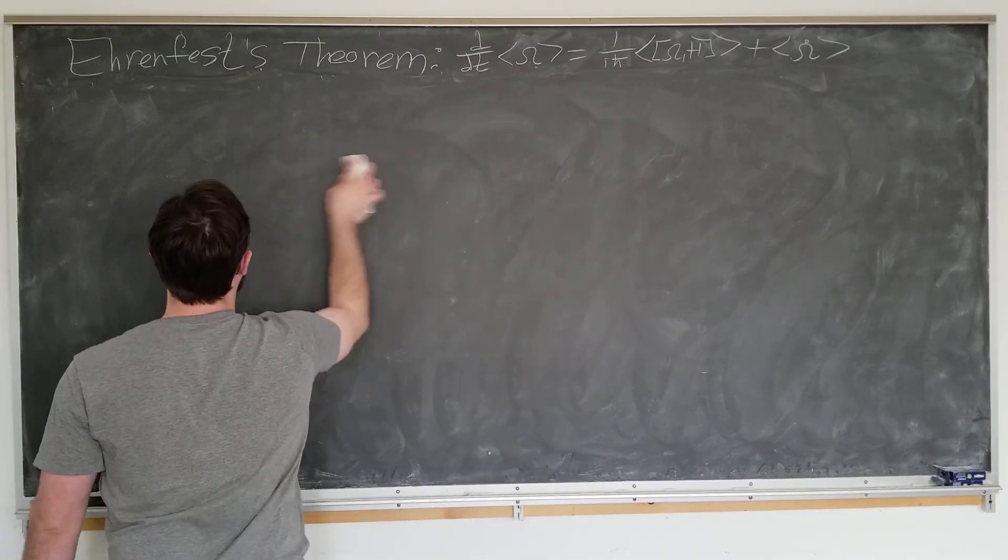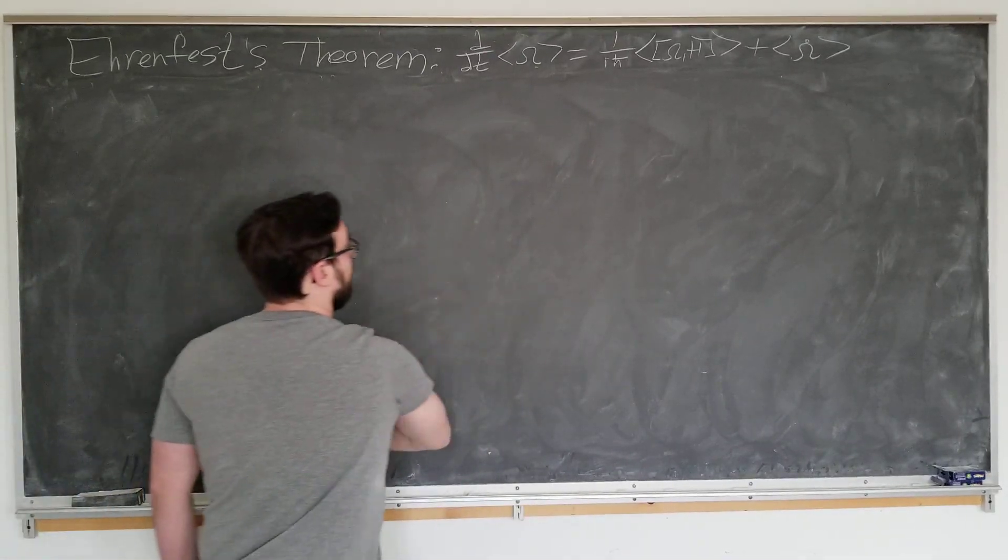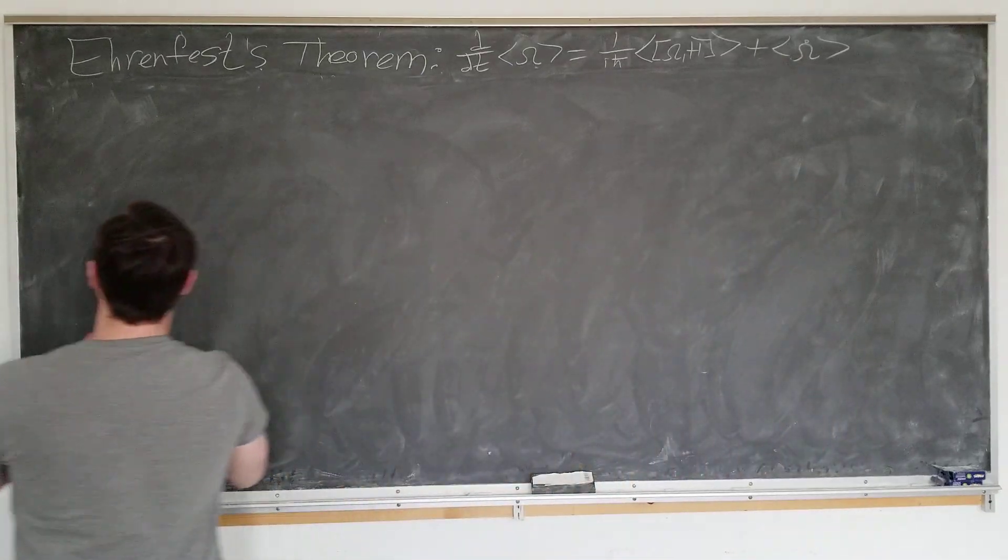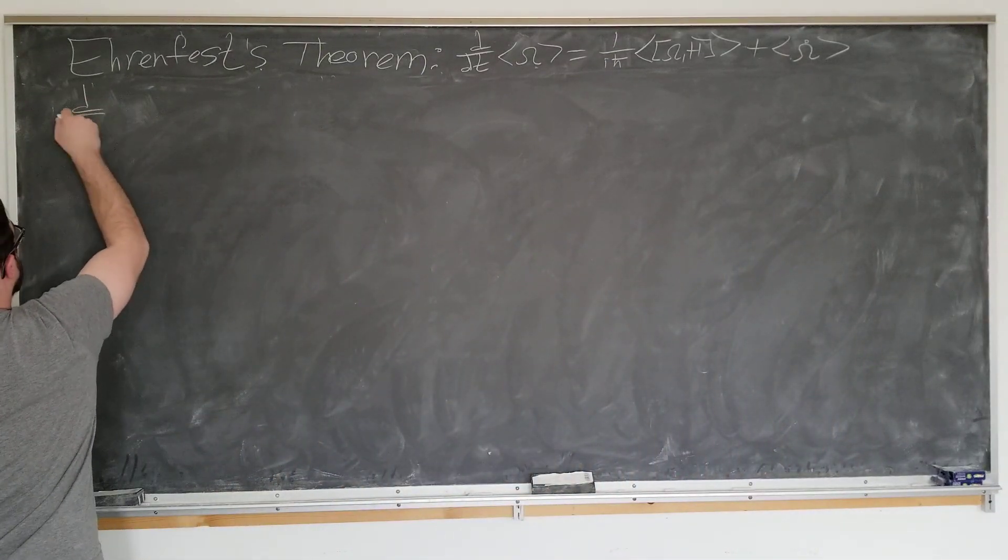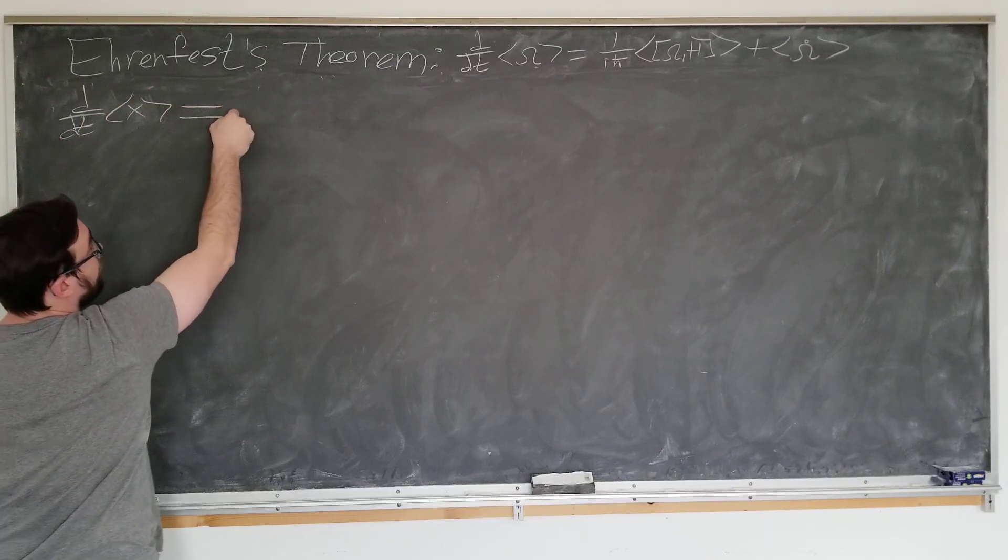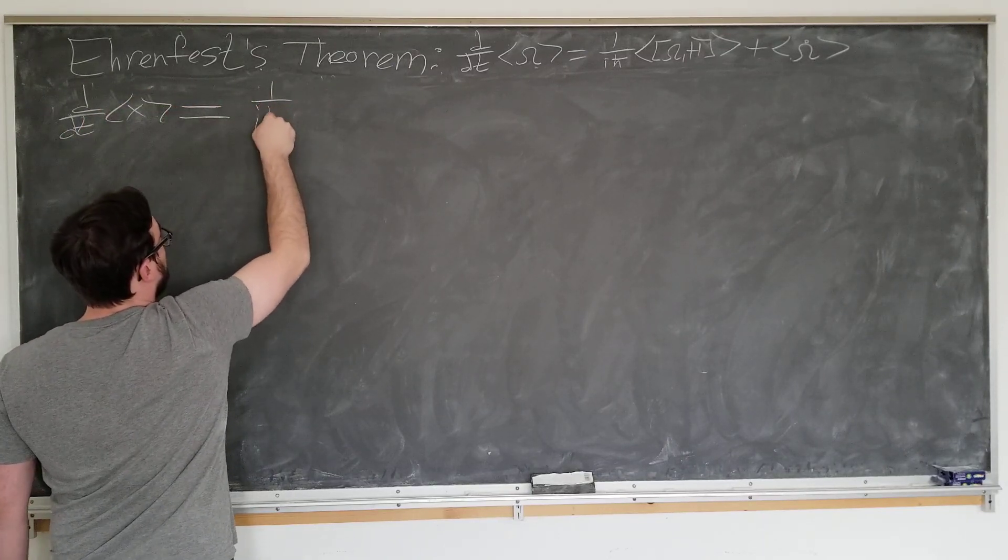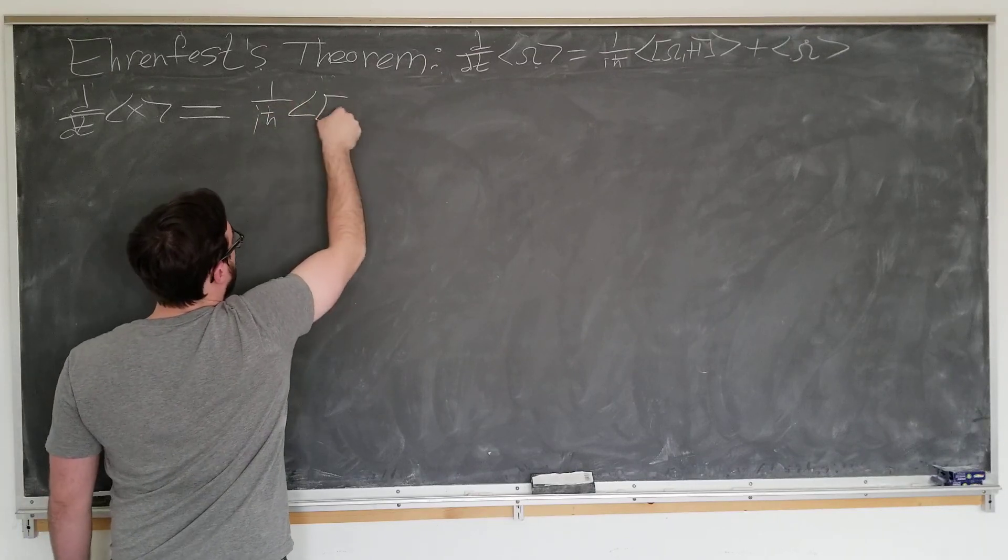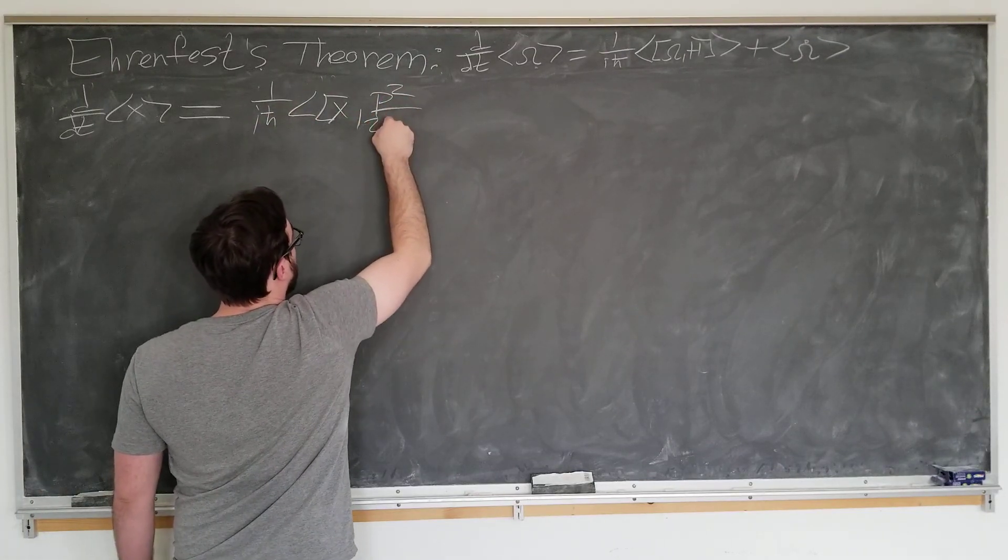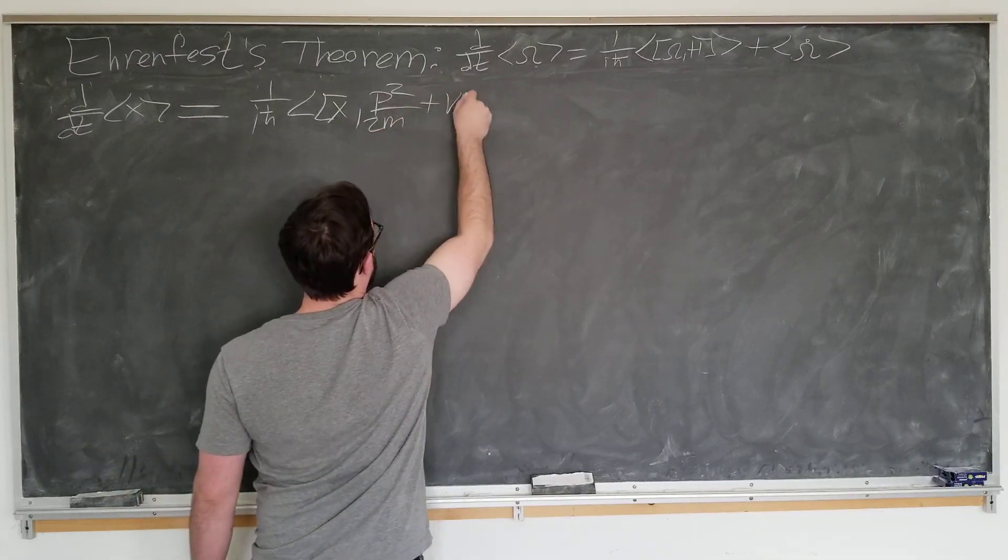We want to go ahead and apply it to some familiar operators to see what the gist of the theorem is. We will start off with the position operator, in some sense the simplest operator, just x itself. So the time derivative of position operator equals one over i h bar, expectation value of x with the Hamiltonian, which we replace as p squared over 2m plus v.